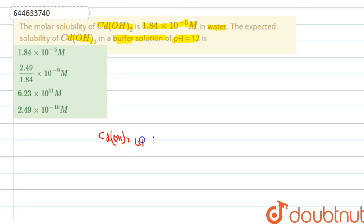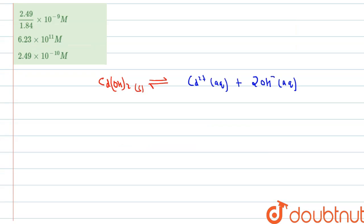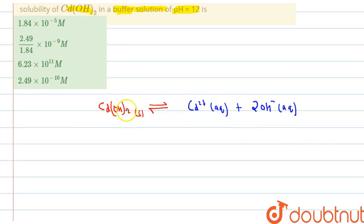Cd(OH)₂ solid remains in equilibrium with Cd²⁺ aqueous plus 2OH⁻ aqueous. The equation is balanced — there are two OH⁻ ions on each side and one Cd. The solubility is s, so [Cd²⁺] = s and [OH⁻] = 2s, where s = 1.84×10⁻⁵ molar.